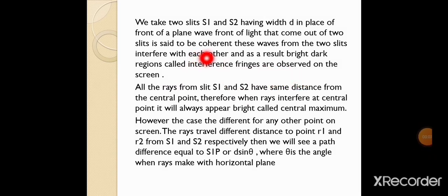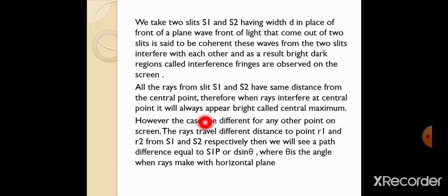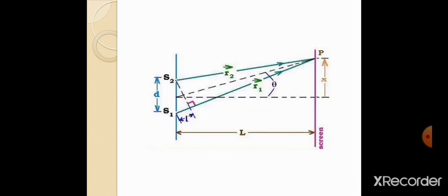Is explanation mein wohi hai ke humne do slits li hain aur uske saamne ek screen rakhi hui hai jahan pe dark and bright fringes observe karni hain. All rays from slit S1 and S2 have the same distance from the central point; therefore when rays interfere at the central point, it will always appear bright — called the central maximum. Central point ke upar path difference equal hoga, isliye central point ke upar hamesha bright fringe banegi.